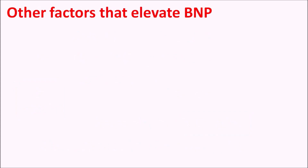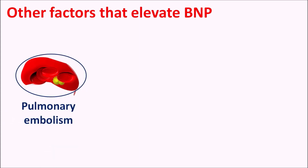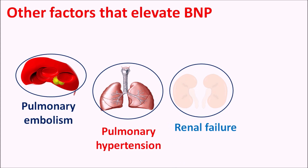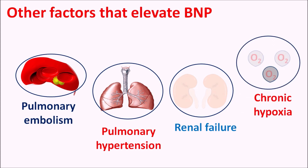Other factors that can elevate BNP: not only heart failure, but other conditions also elevate BNP levels. For example, patients with pulmonary embolism — where there is a blockage of circulation within the lungs — as well as pulmonary hypertension, renal failure where natriuresis is reduced, or chronic hypoxia. In all these conditions, BNP may be elevated. When BNP levels are elevated along with any cardiac symptoms, it may be related to heart failure in the patient.